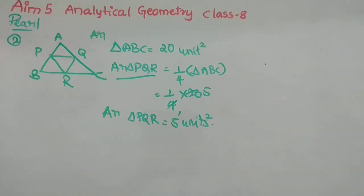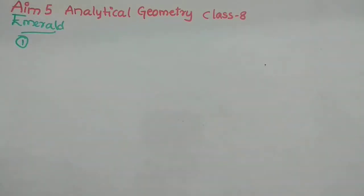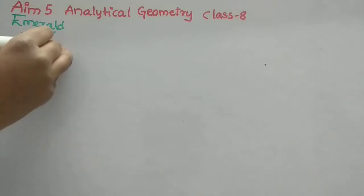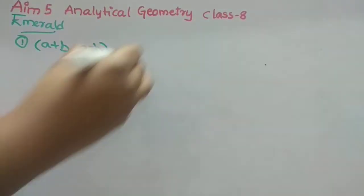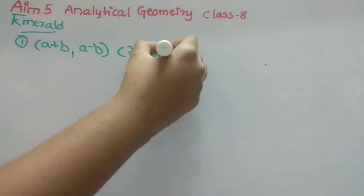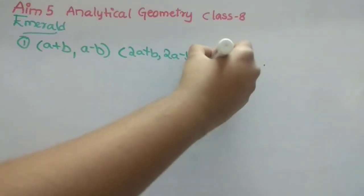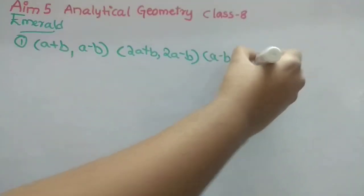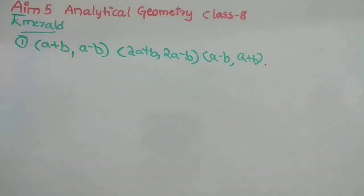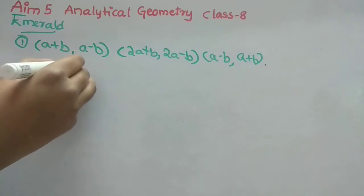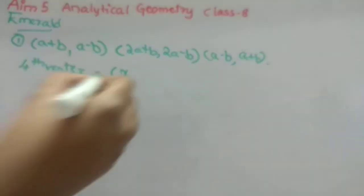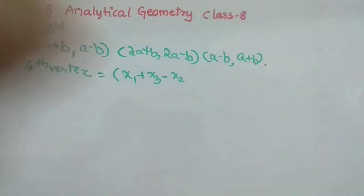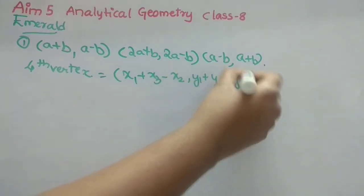Now we will see the Emerald package. First question: three vertices of a parallelogram are given — (a+b, ...), (2a+b, 2a−b), and (a−b, a+b). We have to find the fourth vertex. The formula for the fourth vertex is: (x1 + x3 − x2, y1 + y3 − y2), similar to the challenger question.